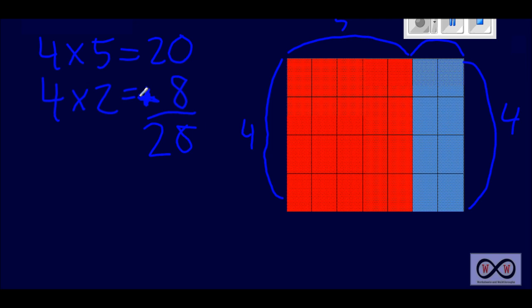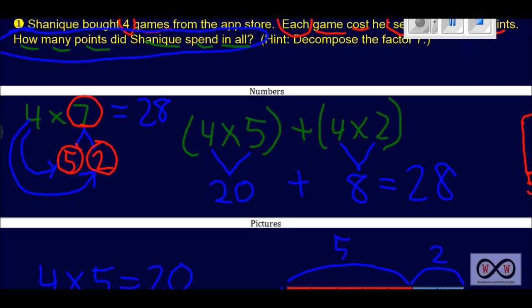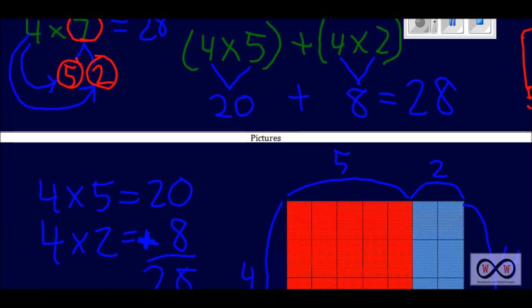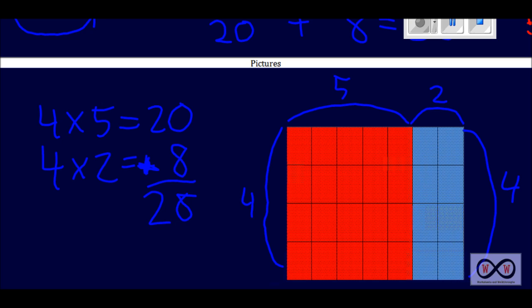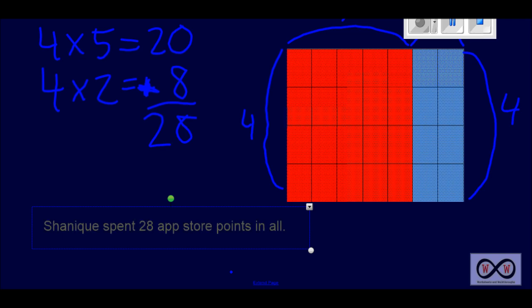Let's take a look at the words section. The best way to do that is to go back to your math job and ask yourself: did I answer my math job? How many points did Shanique spend in all? Did we find out how many she spent in all? I think we did. She had four games, each game cost seven points, we decomposed that seven into five and two, then multiplied four by five and four by two using the distributive property, and came up with 28. We can now write: Shanique spent 28 App Store points in all.